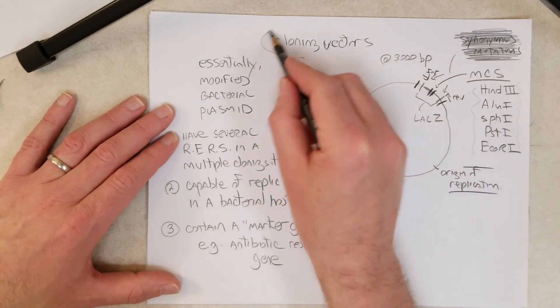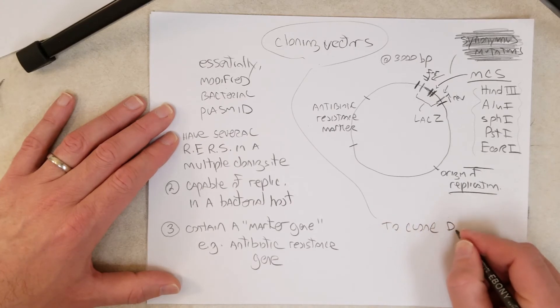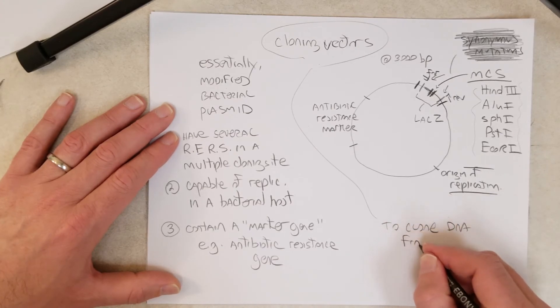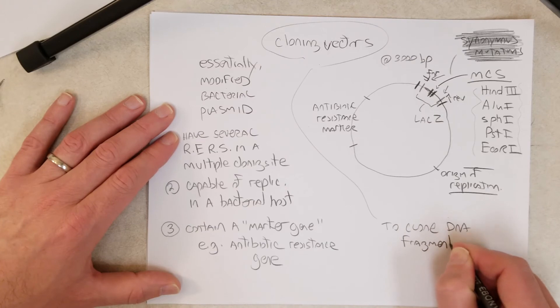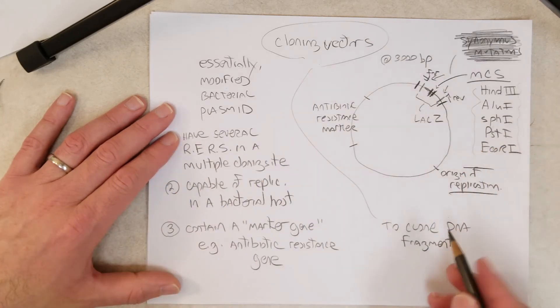Cloning vectors are used to clone DNA fragments. The DNA fragment may be a gene, it may be part of a gene, it may be an intergenic region, it could be anything, but it's a DNA fragment.